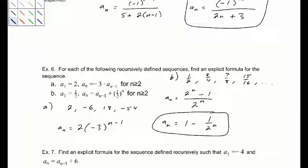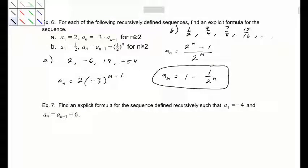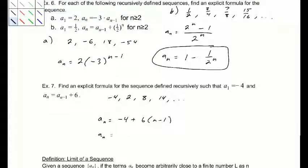One more recursive: the first term is negative 4, and it appears to be adding 6 each time, giving the sequence negative 4, 2, 8, 14, etc. So a sub n equals negative 4 plus 6 times (n minus 1), or 6n minus 10.